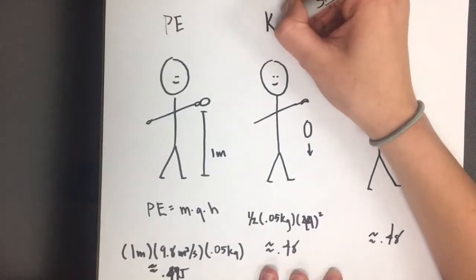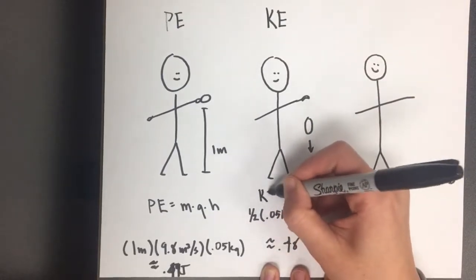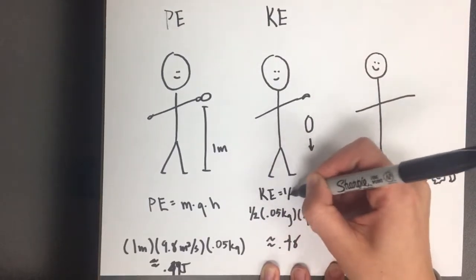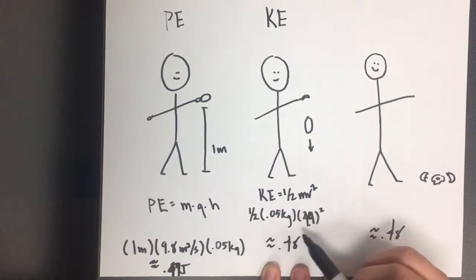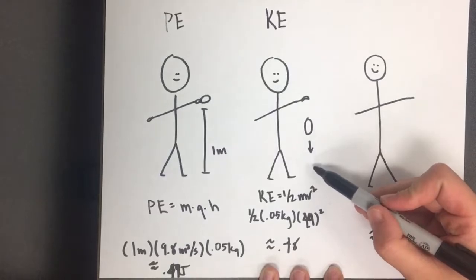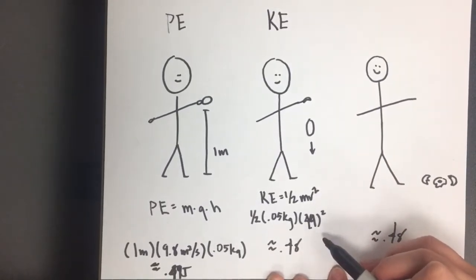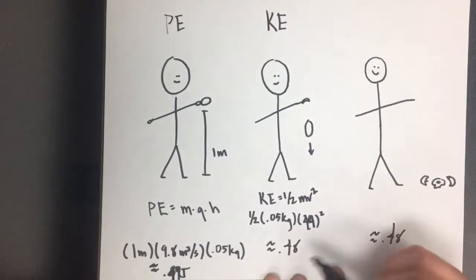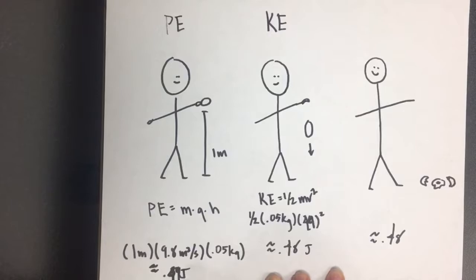Next, this potential energy will be converted to kinetic energy. Kinetic energy is equal to one-half mv squared. So we have one-half times the mass times the velocity just before the egg hits the surface, which we estimate to be about 0.44 meters per second. This is equal to 0.48 joules, which is just about equal to the energy that we started with as potential energy.